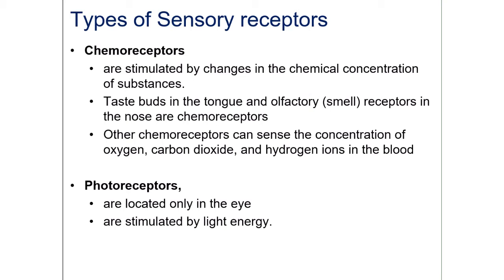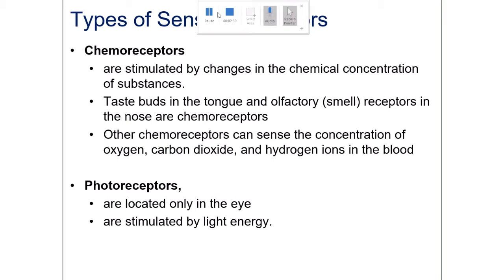Last but not least, we have photoreceptors, located in the eye. You have receptors to detect three main colors — red, green, and blue — and by combining these receptors you can see all the other colors. More on that later when we talk about the eye. Next we're going to look at taste and smell.